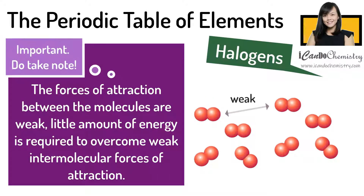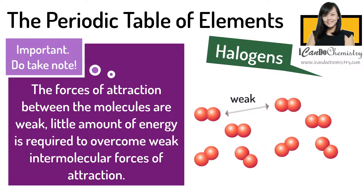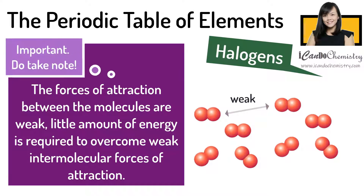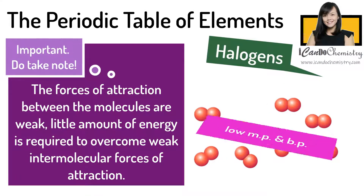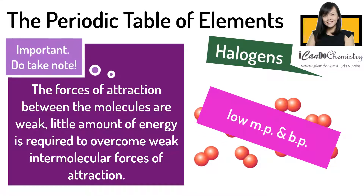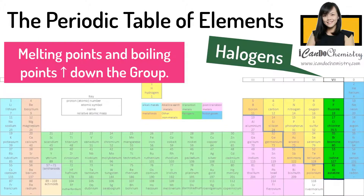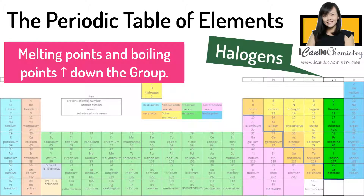The forces between the molecules are weak. Little amount of energy is required to overcome these weak intermolecular forces of attraction. Hence, the melting point and boiling point of halogens are low. The melting points and boiling points increase down the group.